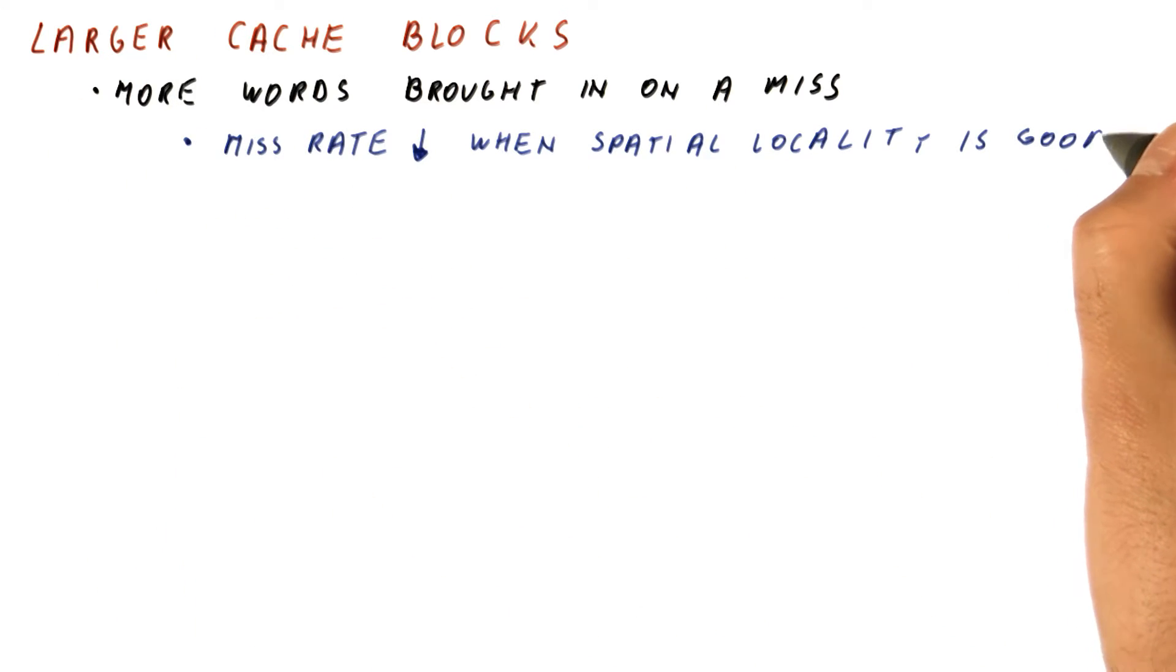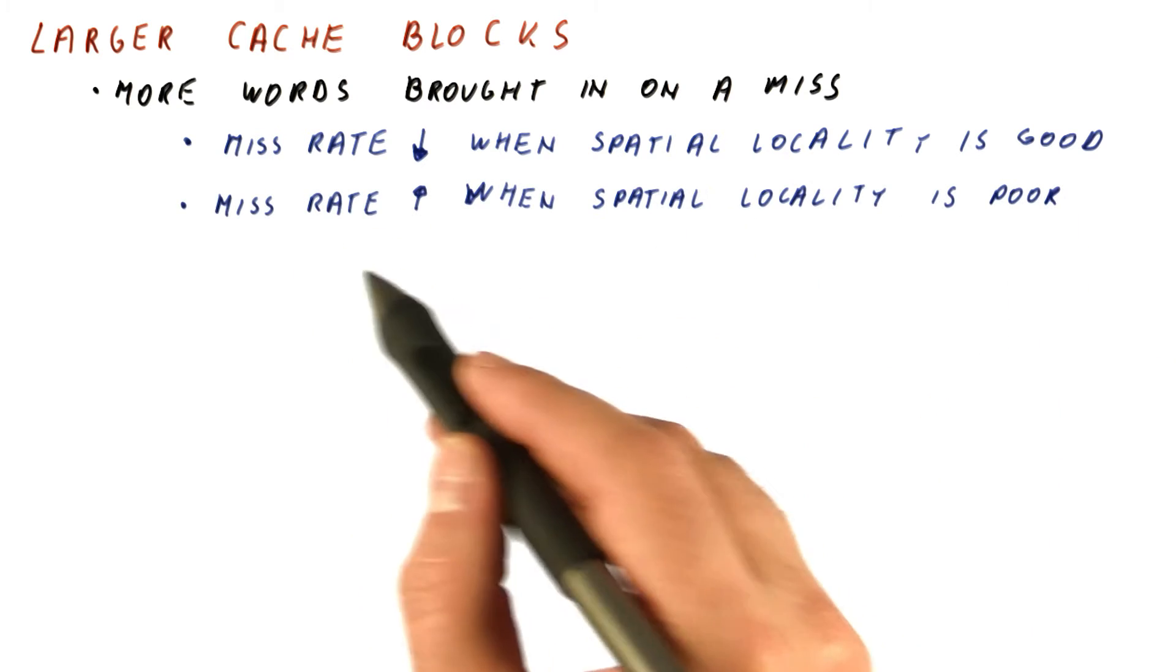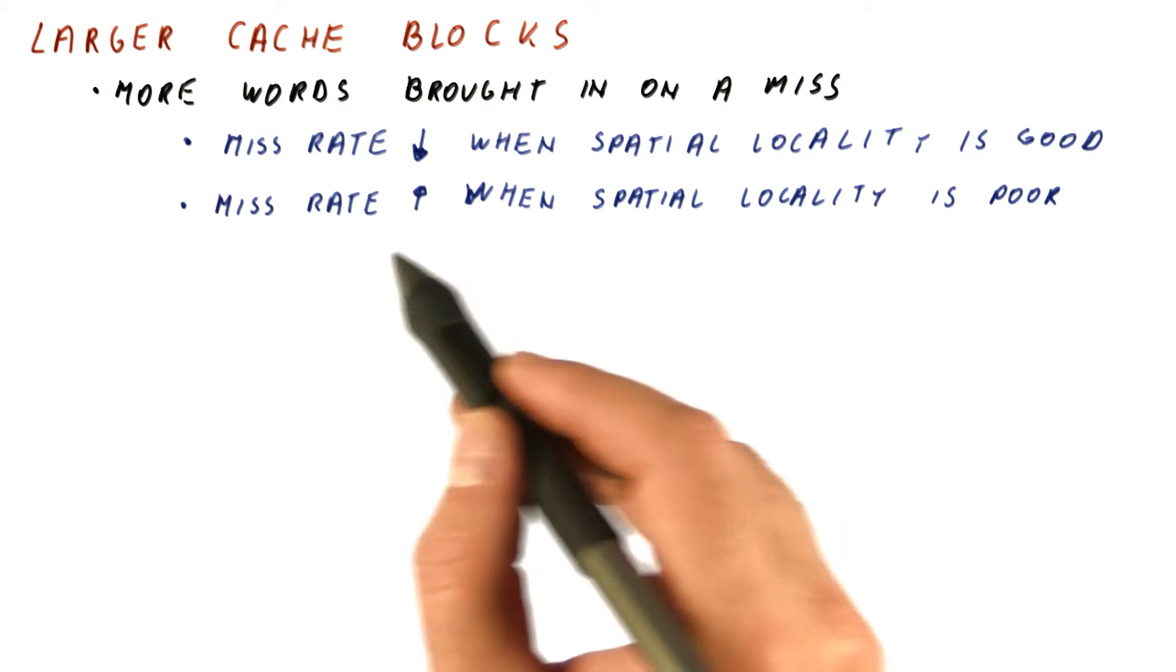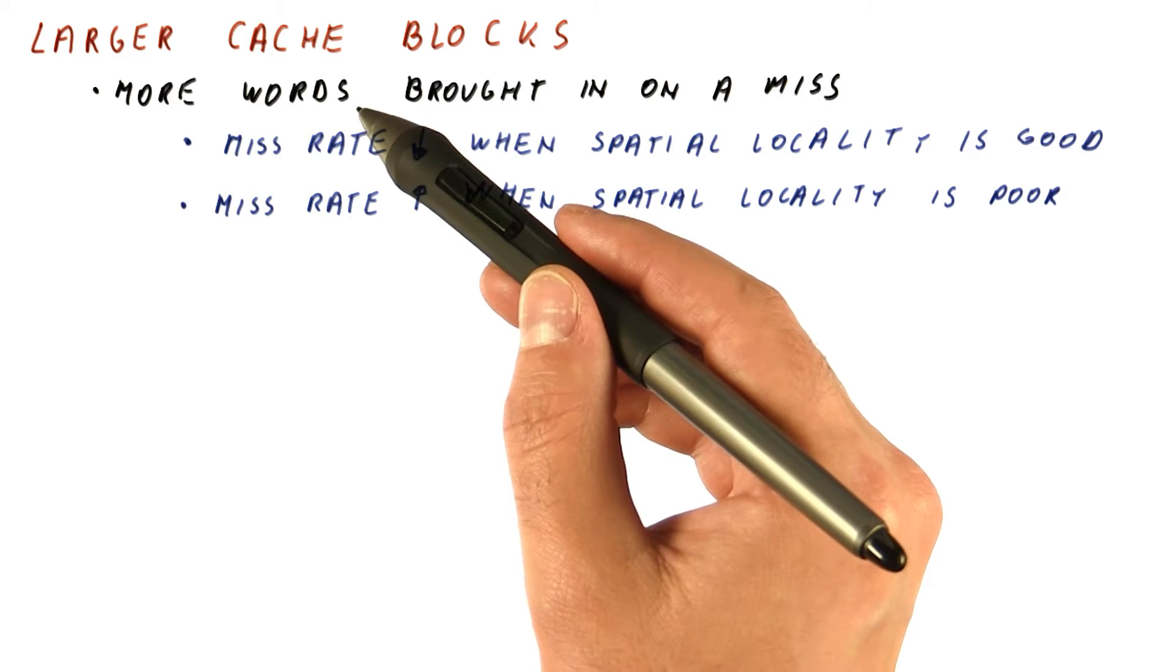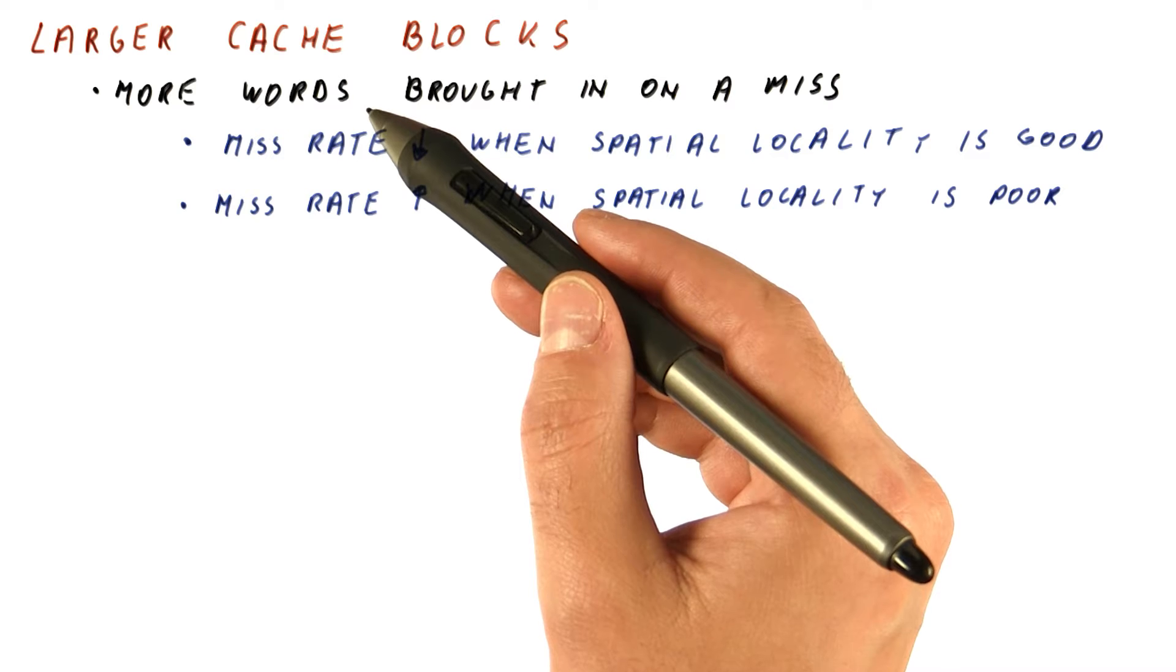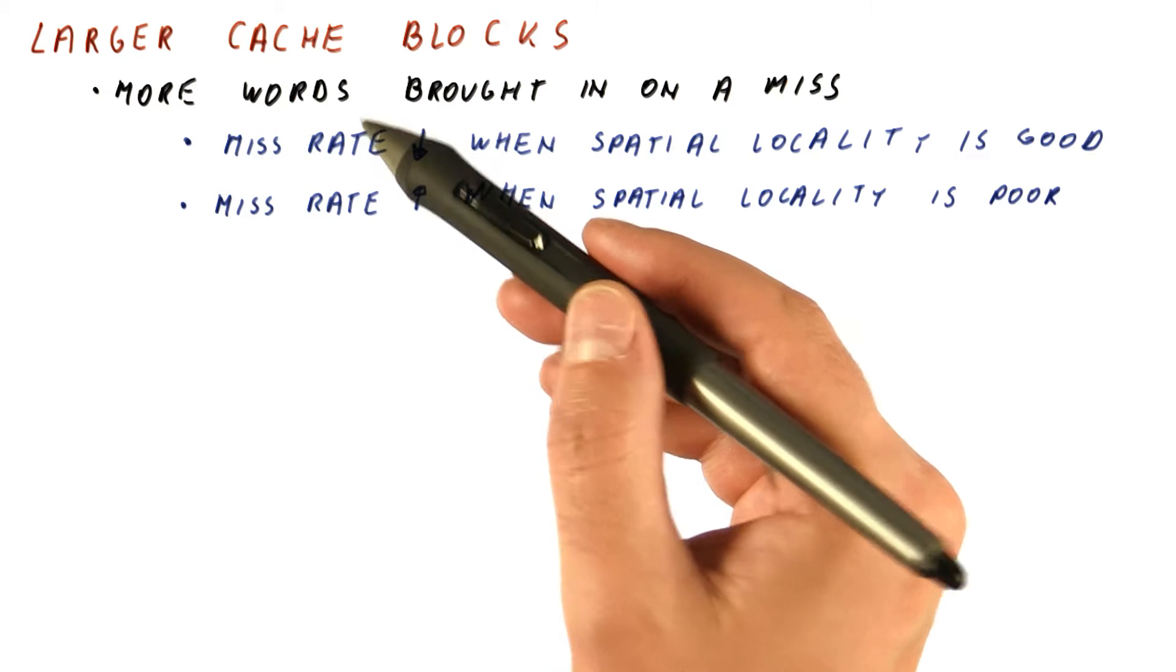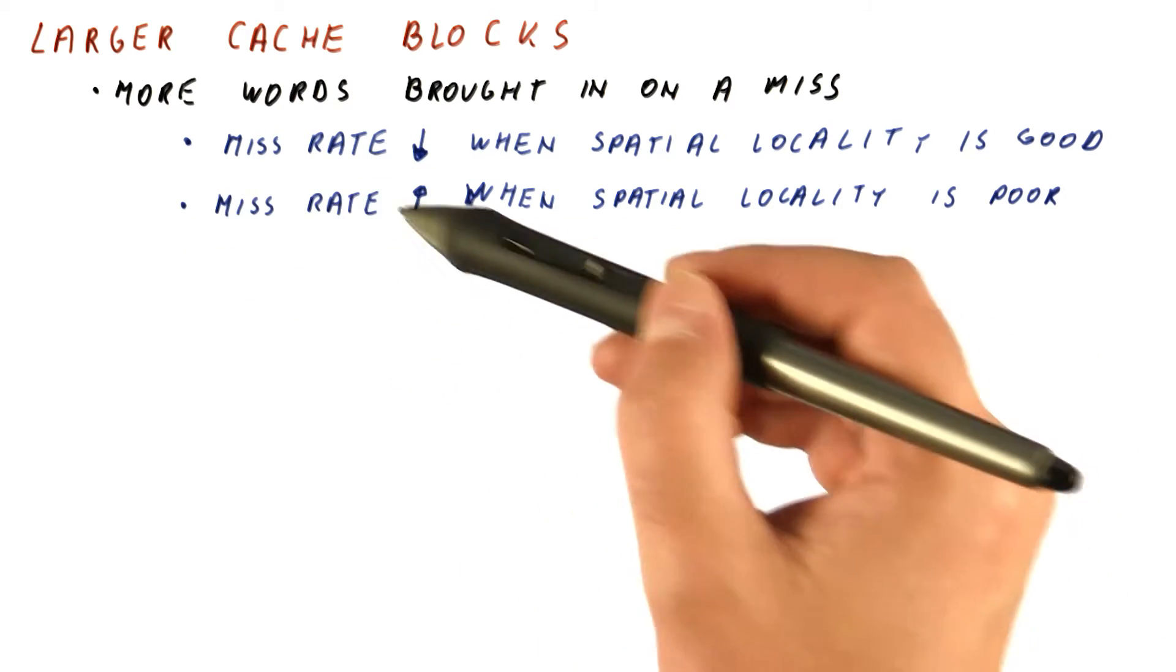This does reduce the miss rate, but only when spatial locality is good. When spatial locality is poor, the miss rate will increase, because now we bring in the word we need and along with it, more words that we didn't need. Effectively, our cache now looks like a lower capacity cache because it has more junk in it, so we end up suffering more capacity misses.